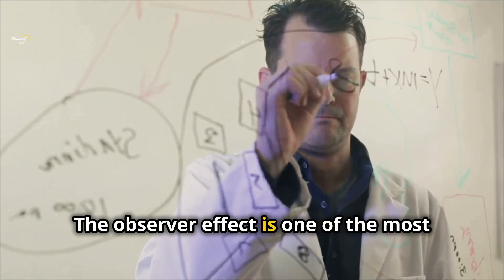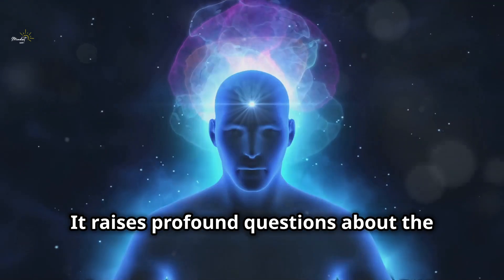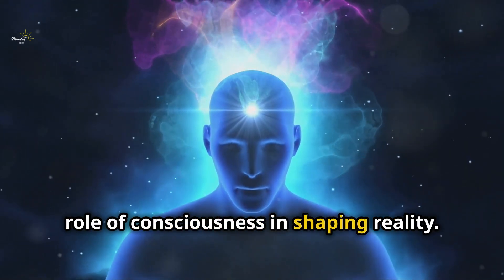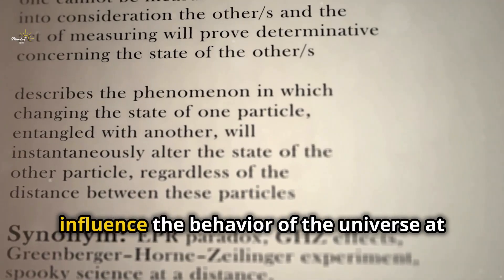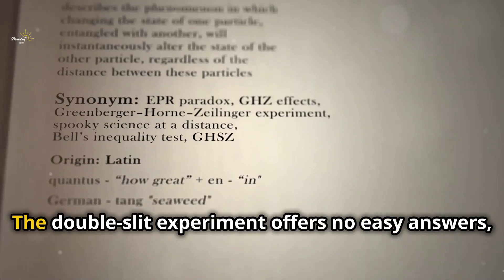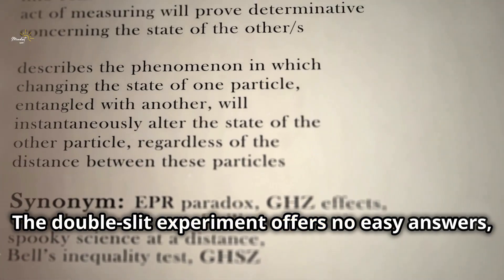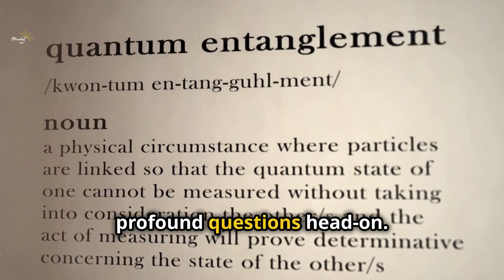The observer effect is one of the most perplexing and debated aspects of quantum mechanics. It raises profound questions about the role of consciousness in shaping reality. Does our observation, our awareness, influence the behavior of the universe at its most fundamental level? The double slit experiment offers no easy answers, but it compels us to confront these profound questions head on.